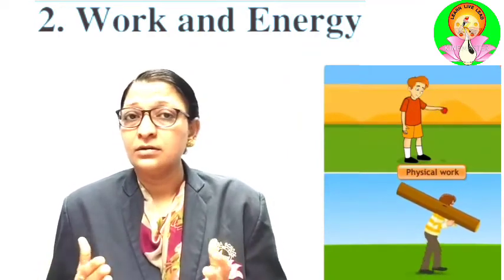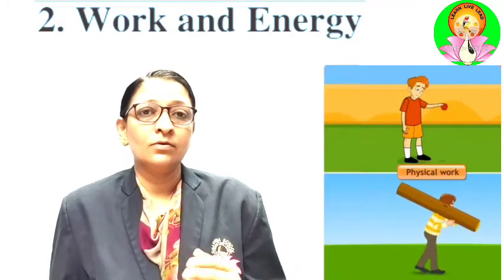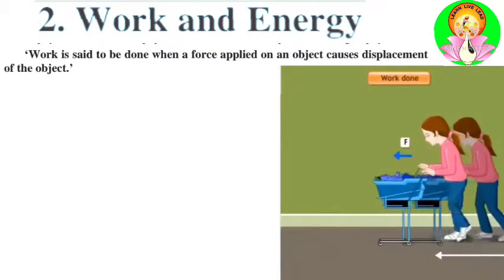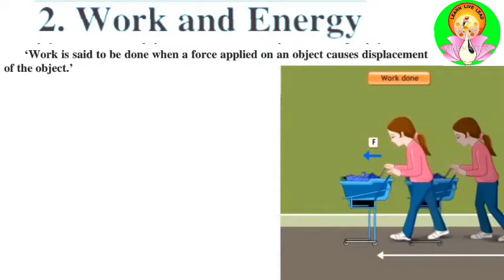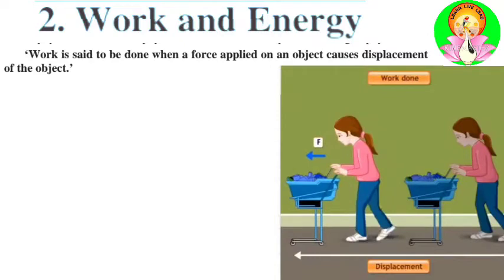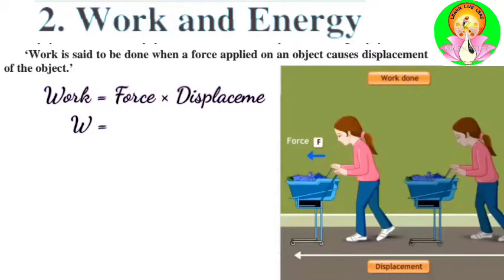From this we can write the formula for work as: work is equal to force multiplied by displacement. So when force is applied on an object and the object makes a displacement, work is done. The formula is: W = F × S.